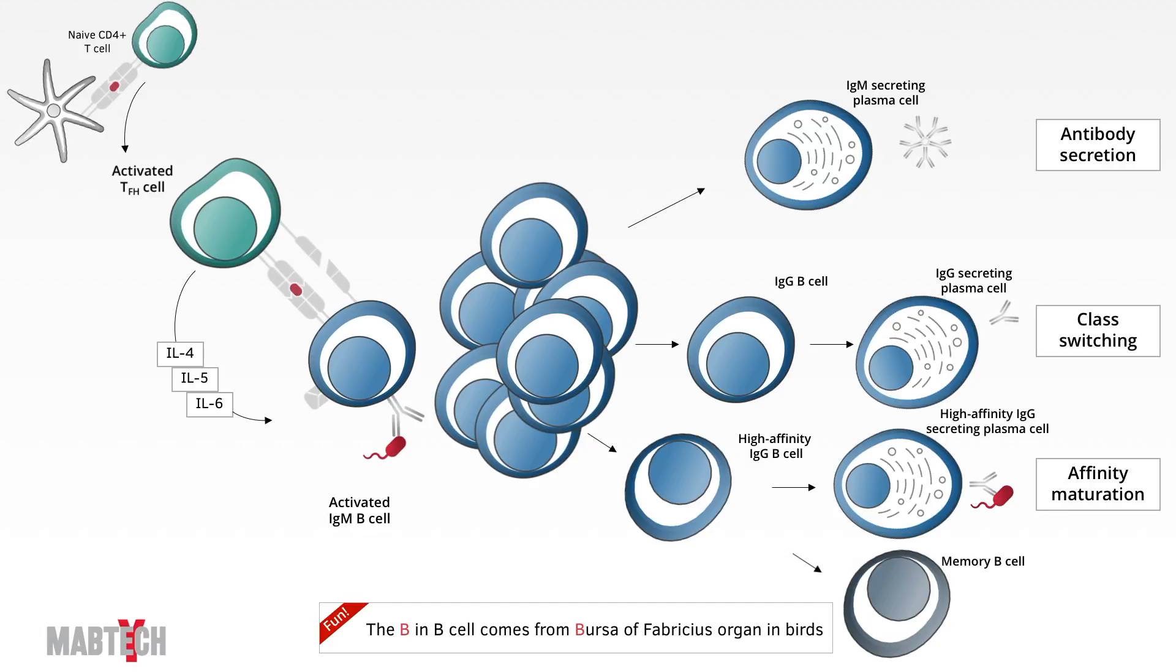The B in B-cells comes from the bursa of Fabricius organ in birds. This is the organ in birds where B-cells were first found. Since B-cells develop in the bone marrow in humans, the B is still good though.